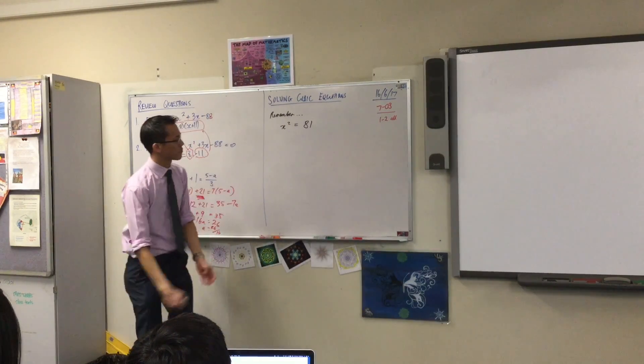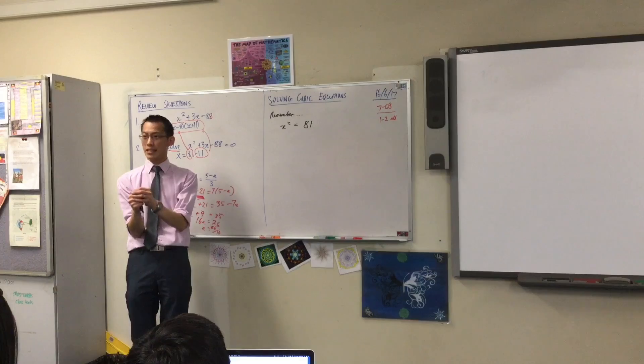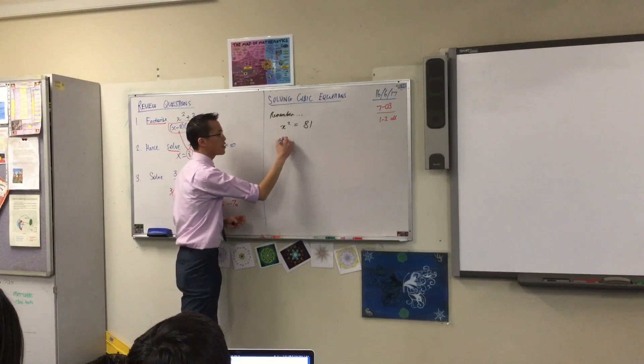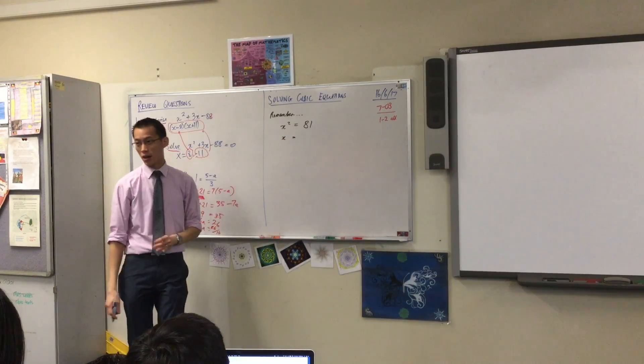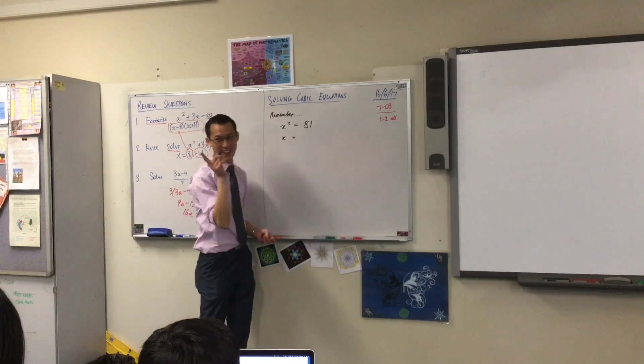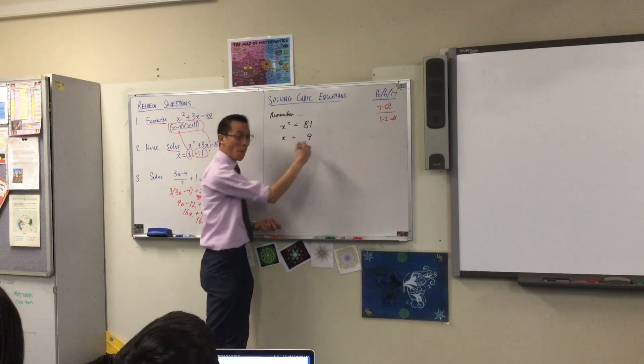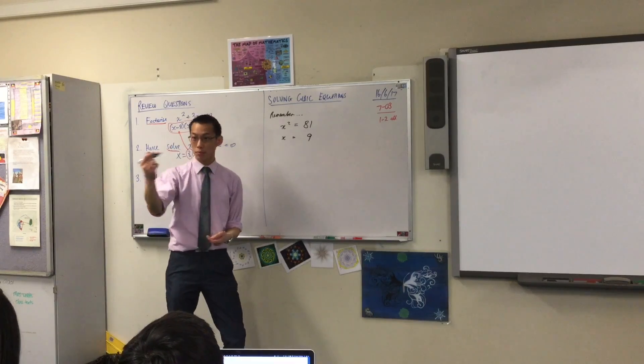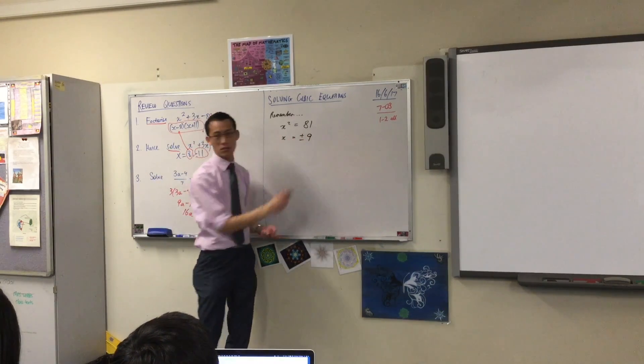For x squared equals 81, there's more than one solution for this, isn't there? The obvious solution is plus minus 9. We got the answer straight away. The obvious answer is 9, but there is a plus or minus. There's actually two solutions.